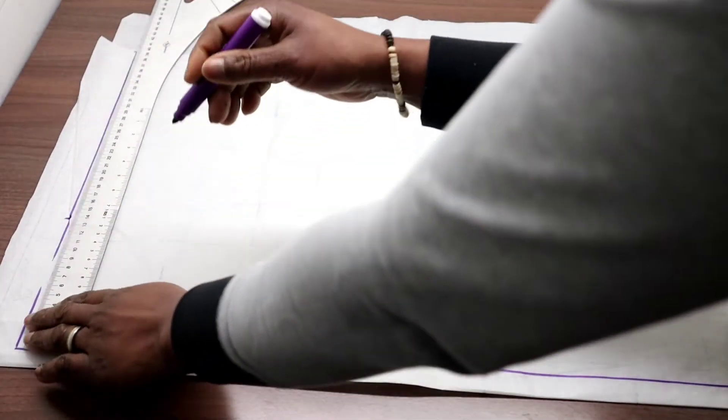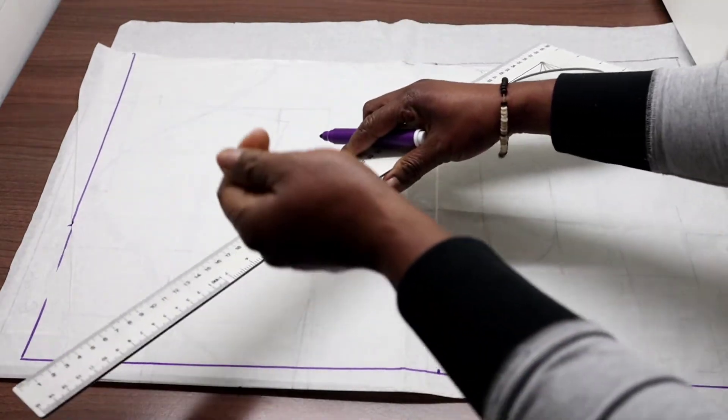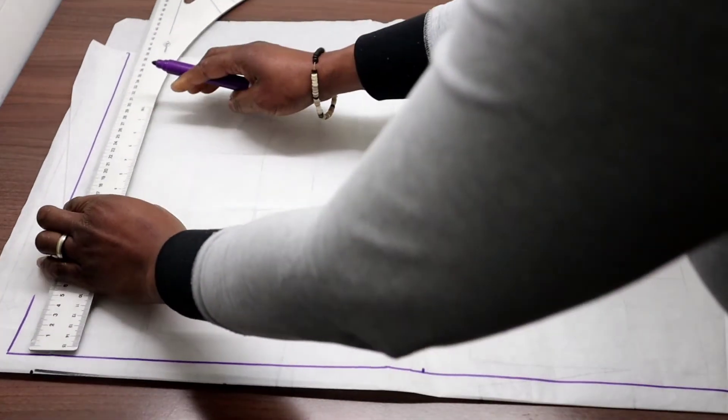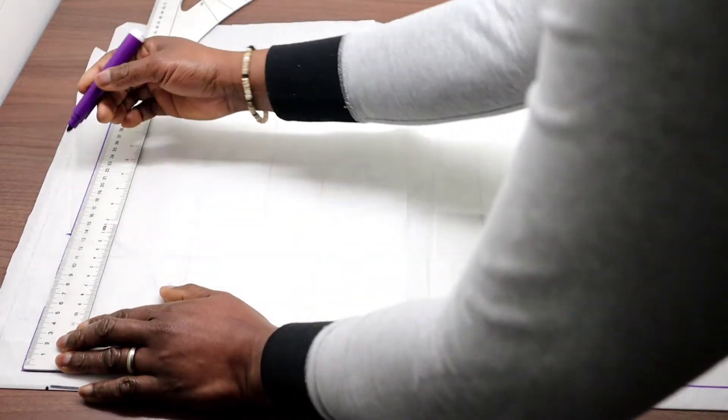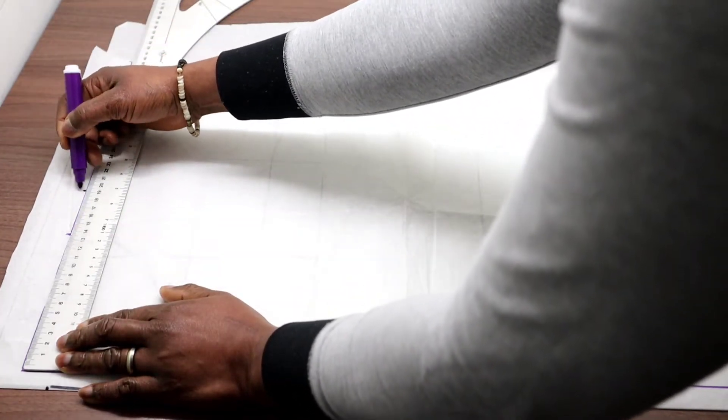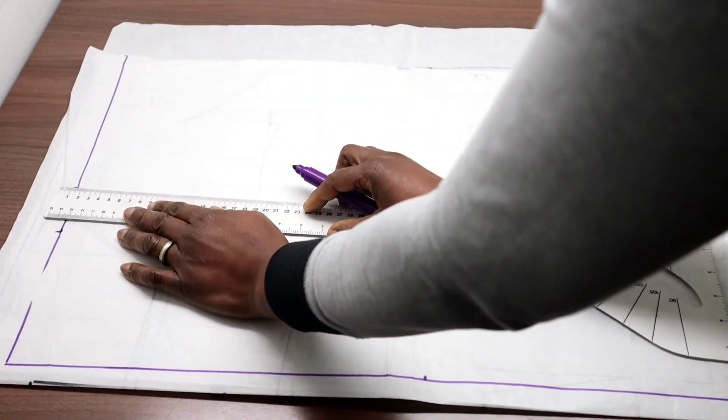Next is to determine the shoulder seam. Our shoulder seam is the sleeve width divided by 2 minus 1. So we will draw the shoulder seam. We make a point of the shoulder seam here. Then we will go up from this point with 1.5 cm.